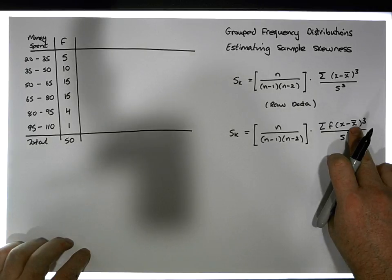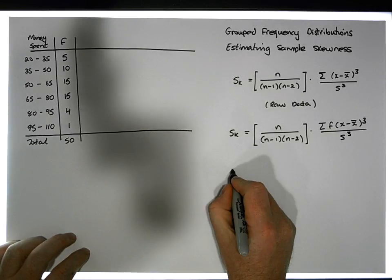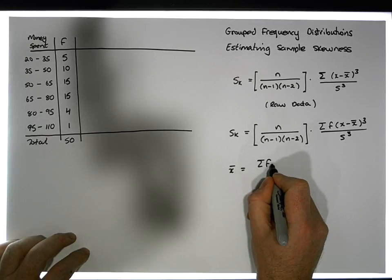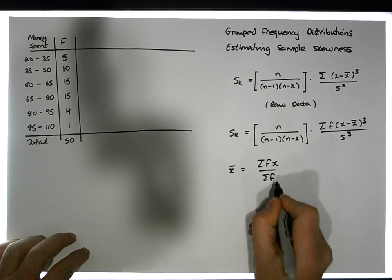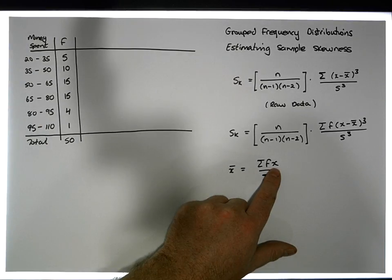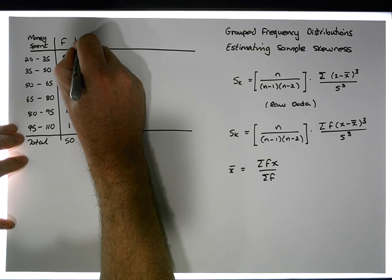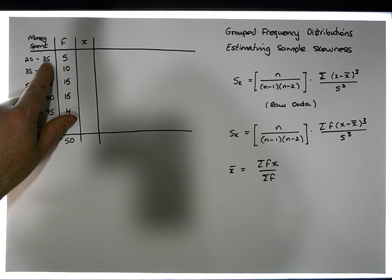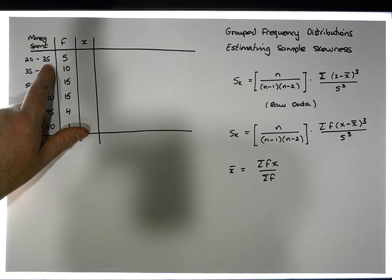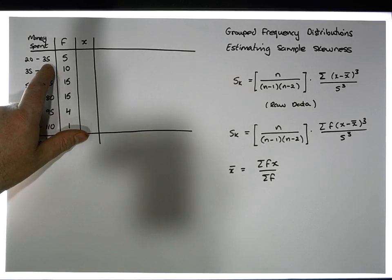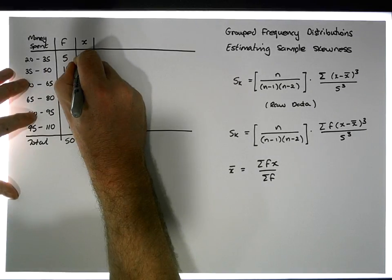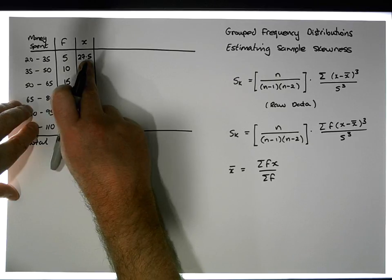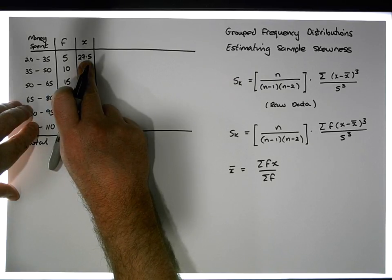Before calculating skewness, we need the sample mean. From a frequency distribution, x̄ = Σ(f·x) / Σf. We estimate x as the midpoint of each class. For the first class, 20 to 35: (20 + 35) / 2 = 27.5. So we assume those five observations all take the value 27.5.